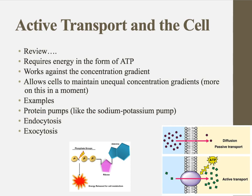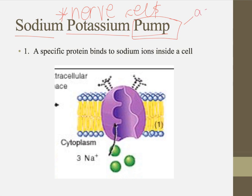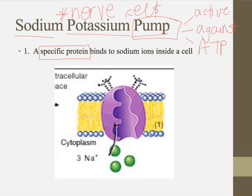Examples of active transport include protein pumps like the sodium-potassium pump — you're going to hear about that a lot throughout this course — as well as endocytosis and exocytosis. Let's take a look at how the sodium-potassium pump actually works. The word 'pump' is a dead giveaway that this is active transport, that we're going against the concentration gradient, and that it requires energy in the form of ATP. Different molecules require different pumps; proteins have specific shapes and only work for specific molecules.